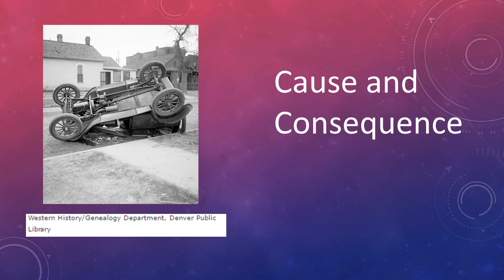Cause and consequence involves looking at and asking how these different situations and contexts overlap to create the situation at a later point in history, or the situation in the present.